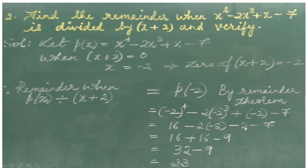Which will be equal to: minus 2 raise to 4 is 16, minus 2 into minus 2 whole raise to 3 is minus 8, so minus 2 into minus 8 is plus 16, plus minus 2, minus 7. So it becomes 16 plus 16 minus 2 minus 7, giving minus 9. Now 16 plus 16 is 32 minus 9, which equals 23. So the remainder when p of x is divided by x plus 2 is equals to 23.